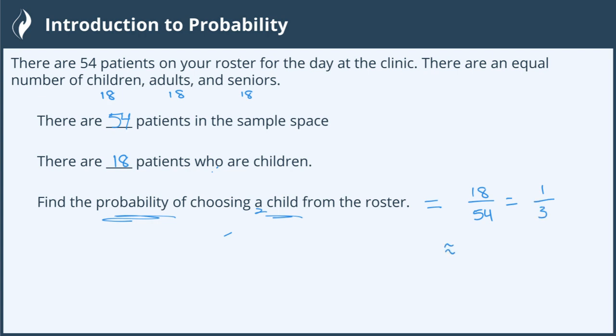Which is approximately — now they don't tell us how to round — but it's important to look for that when doing probability. If I'm rounding to three decimal places, which is typical with probability, that gives us 0.333. So you could be asked for the fraction, the decimal, or the percentage — which, when you have the decimal version, you just move the decimal place two places to the right. So there's a 1/3 chance, or 0.333 probability, or a 33.3% chance of choosing a child.